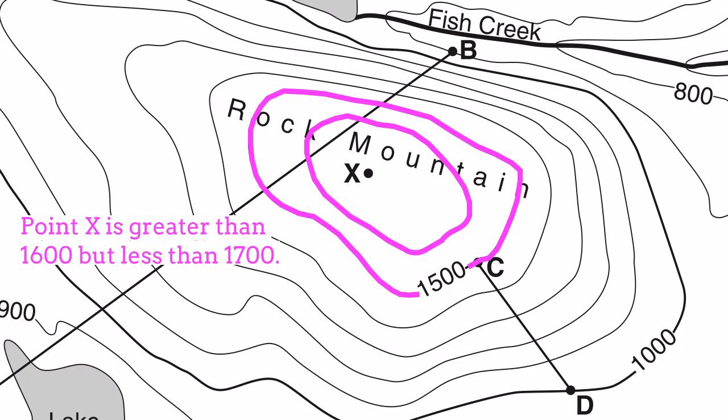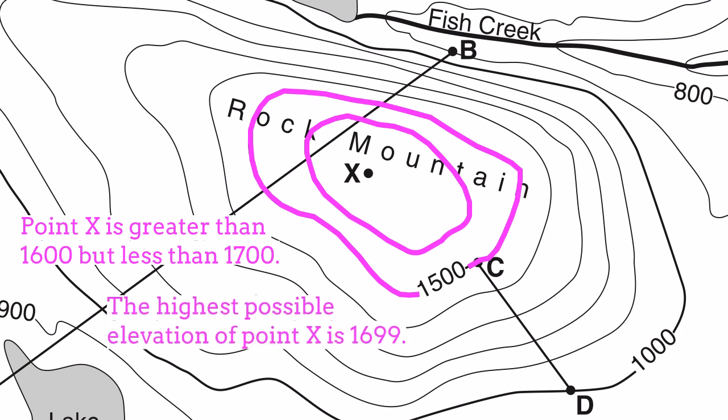But what if I were asked what's the highest possible elevation of point X? Well, that in mind, greater than 1600, but less than 1700, means that the highest possible elevation of X would be 1699.